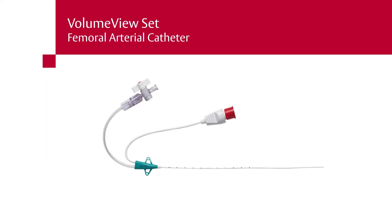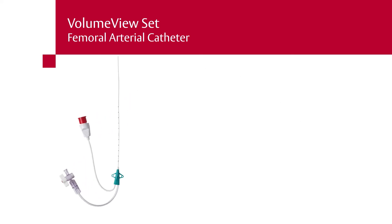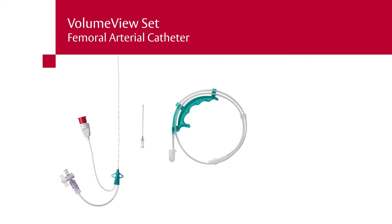Volume view femoral arterial catheter. The volume view catheter is either a 4 or 5 French femoral arterial catheter with an embedded thermistor at the tip, used during TPTD. The kit is composed of: volume view femoral arterial catheter 4 or 5 French with a removable one-way valve to control back bleeding, 18-gauge thin wall needle, 0.025-gauge guide wire, dilator, scalpel with number 11 blade, and 3-0 silk suture with a straight cutting needle.